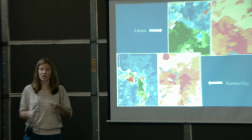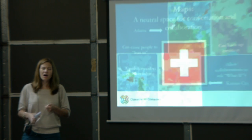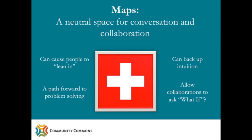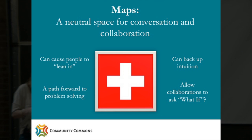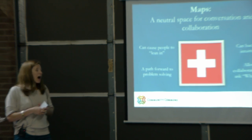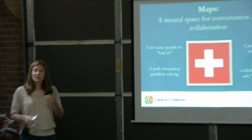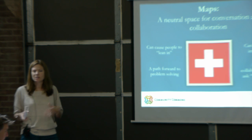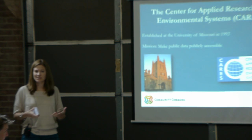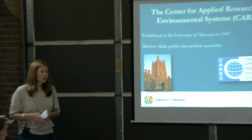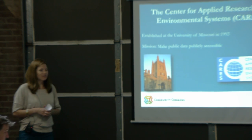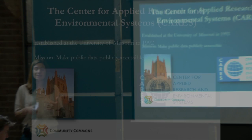Another great thing I like about maps is that they have a Switzerland — a neutral space — they can occupy within a group. I like the way they cause individuals to lean in to examine information, the way they provide a path forward to problem-solving, and they allow collaborators to ask very low-risk what-if scenarios: what if we looked at these different types of data?